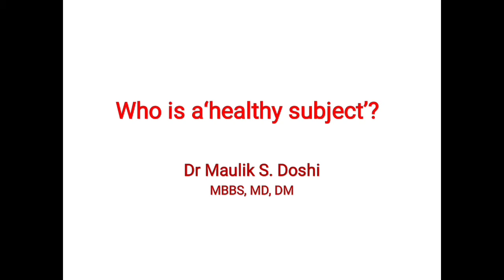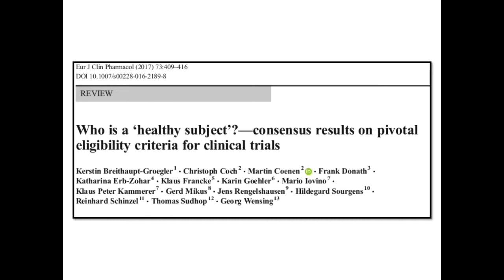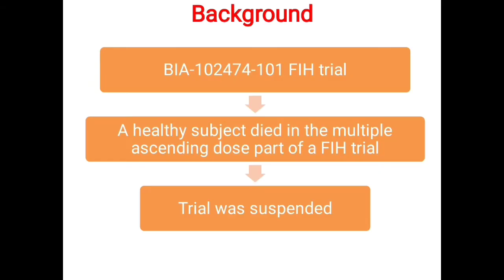Today's discussion will be based on defining a set of criteria that will help a safety physician, medical writer, or clinical research associate to define who is a healthy subject and confirm their eligibility in the trial. It will also ensure that during the clinical trial, the healthy subject's safety and well-being is maintained. A paper published in the European Journal of Clinical Pharmacology mentions that a consensus was achieved among various stakeholders on a standardized approach for the evaluation of healthy subjects before enrollment in phase 1 trials and also during dosing. This consensus was believed to help sponsors, investigators, and clinical trial staff improve subject safety and facilitate interaction with regulatory bodies concerning key safety issues in phase 1 trials.